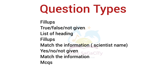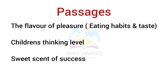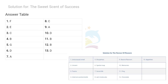Matching type of questions and fill-ins were more. Now related to the headings of the passages, the first one was related to eating habits — the exact passage was 'The Flavor of Pleasure.' The second one was about the thinking level of children, and the last one was 'Sweet Scent of Sexes.' Here you can see the solution for the first and the last one — you can cross check, maybe the order will be different based on the content.